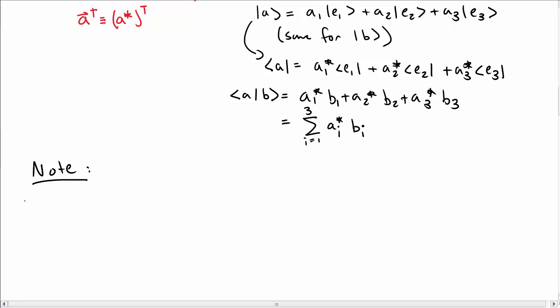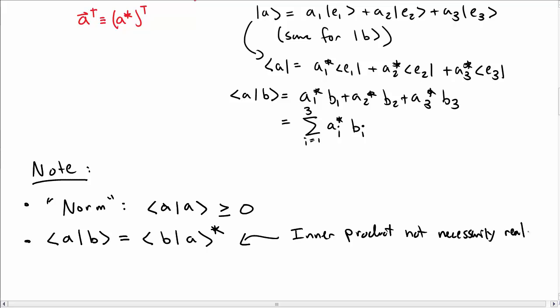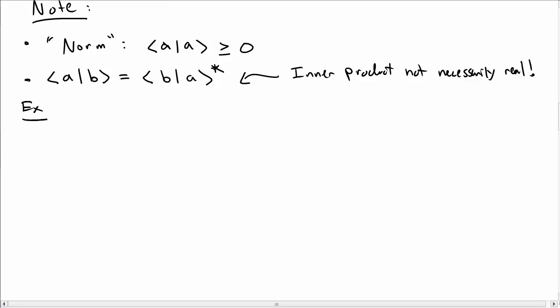A couple of things to note about inner products with complex vectors. So we define a norm, which is the inner product of a state with itself, and that should always be greater than or equal to 0. Also, if I take an inner product between a and b, that's the same as taking the complex conjugate of the inner product between b and a. What that means is that the inner product does not necessarily give you a real number, because you can take a complex conjugate of it. But if I take the complex conjugate, I switch which one goes in which slot.